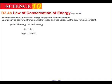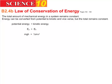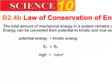Now we're going to have a look at the law of conservation of energy. What this basically means is that the total amount of mechanical energy in a system remains constant. Energy can't be created nor destroyed, but it can be converted from potential into kinetic and vice versa. So what we can essentially say is that in a system, the potential energy is equal to the kinetic energy.